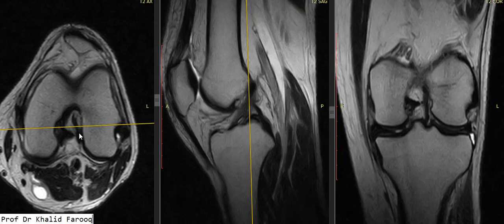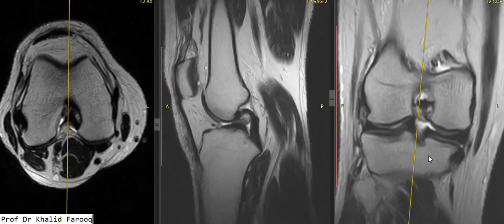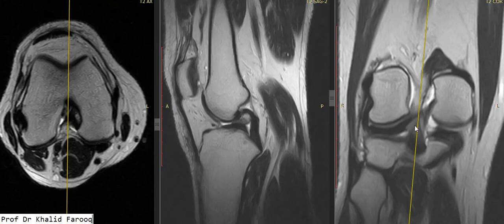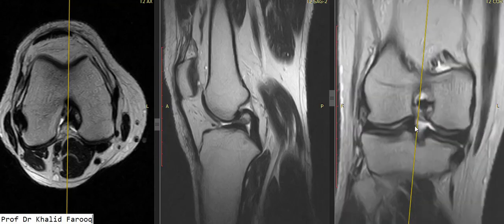Now we will see a totally torn ACL, which is basically representing total chronic ACL transaction. Here is a case where we see this is coronal T2 weighted sequence — normal location and anatomy of the posterior cruciate ligament — but we cannot see the anterior cruciate ligament.